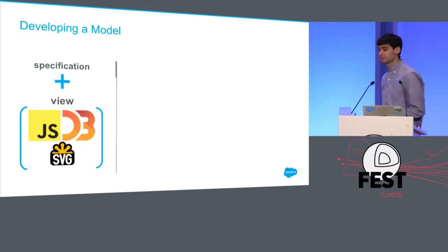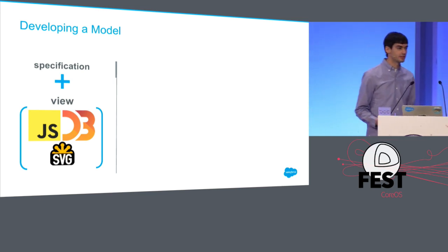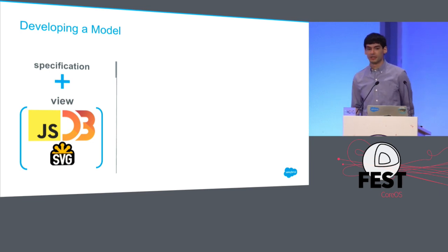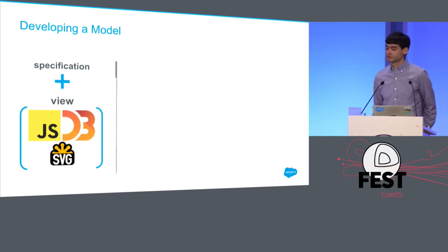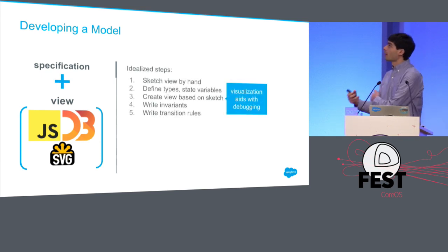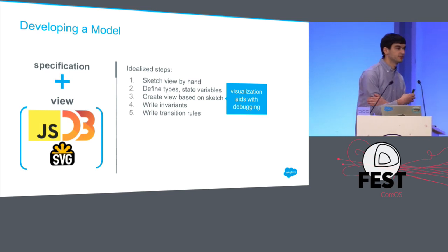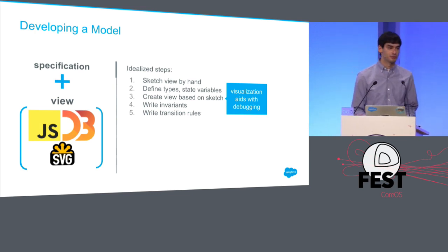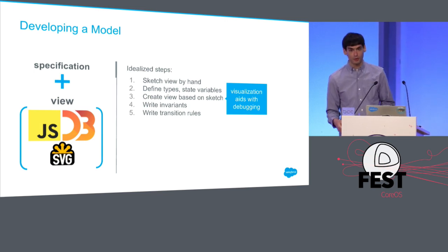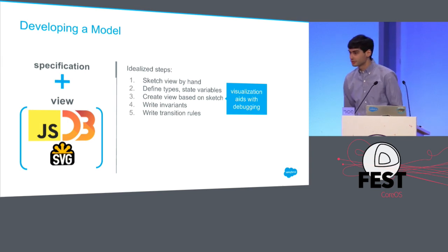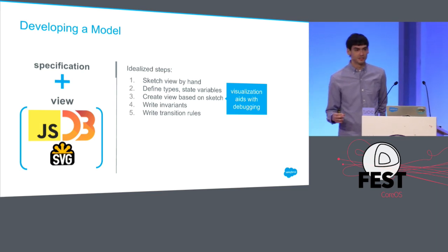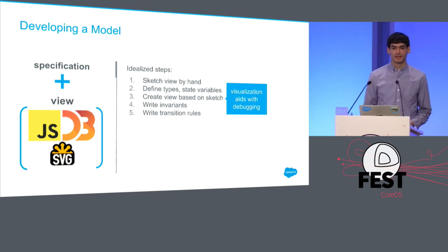The view is built on JavaScript and SVG. I like to use the D3 library for generating SVG because it makes a few things easier. This is probably not where you're going to spend a lot of mental cycles — it takes time, it's tedious, but it's not hard code. I'd recommend taking this approach: first, sketch that view by hand, because drawing on a whiteboard or graph paper is a lot easier than drawing in JavaScript. Identify the basic design elements and figure out your basic layout by hand.